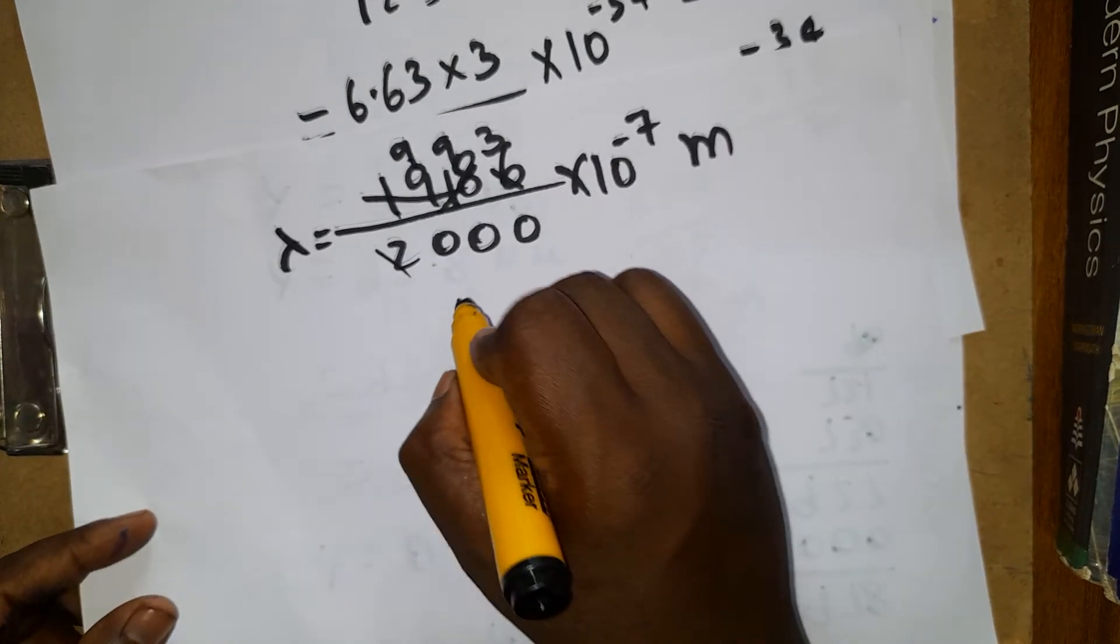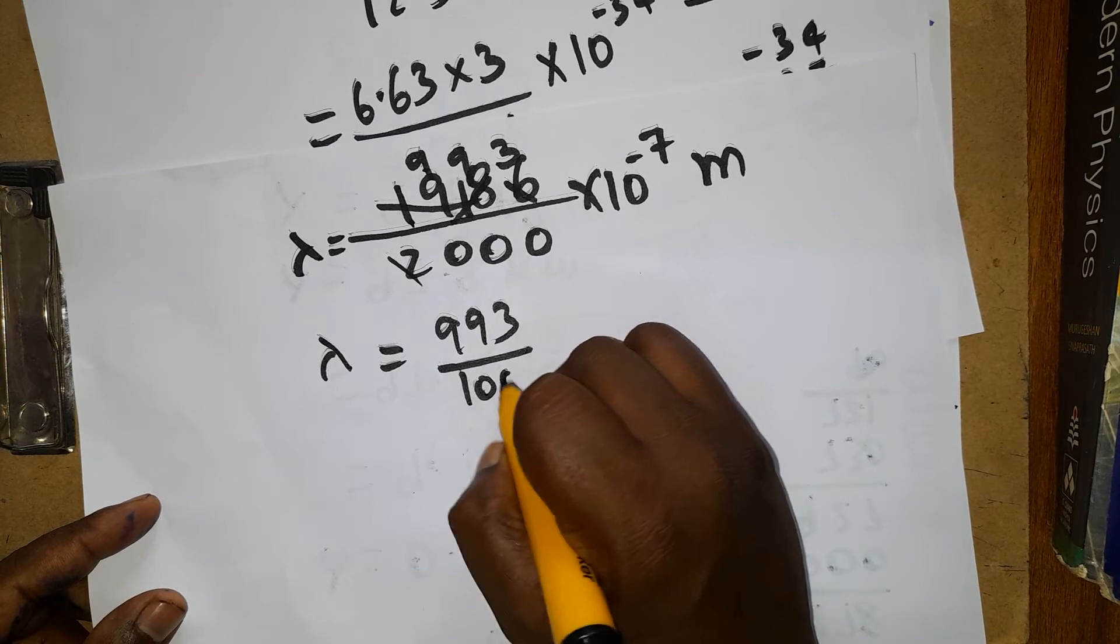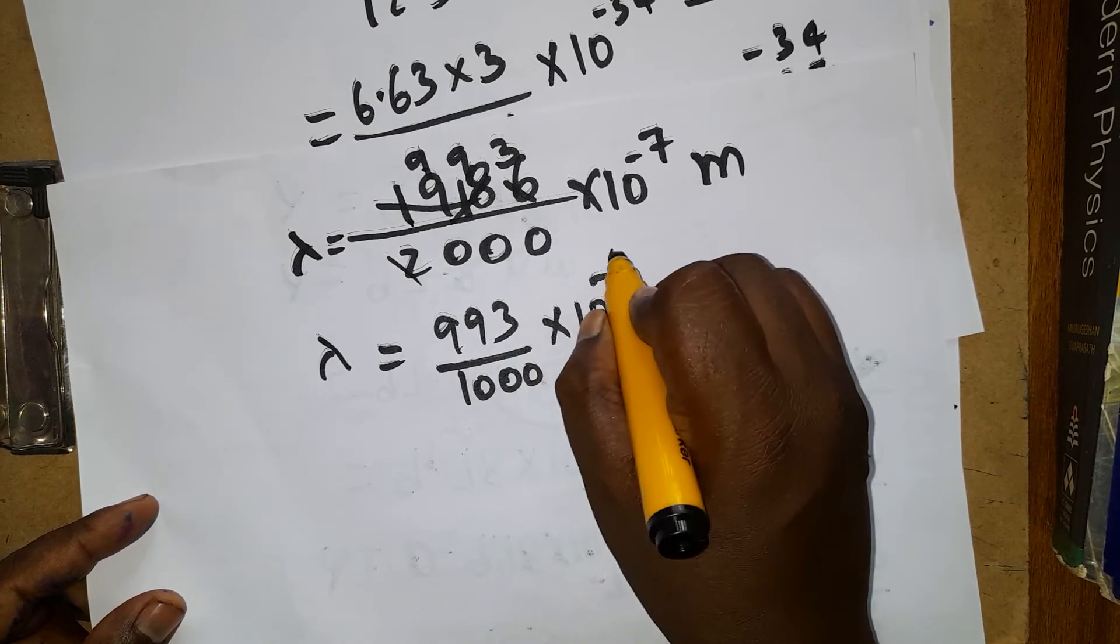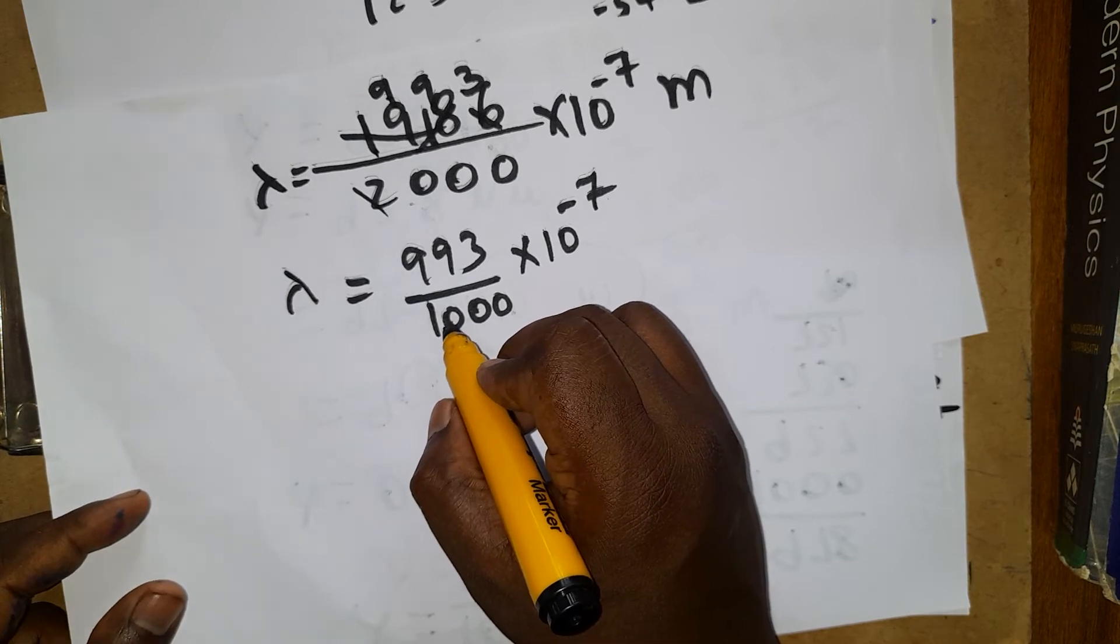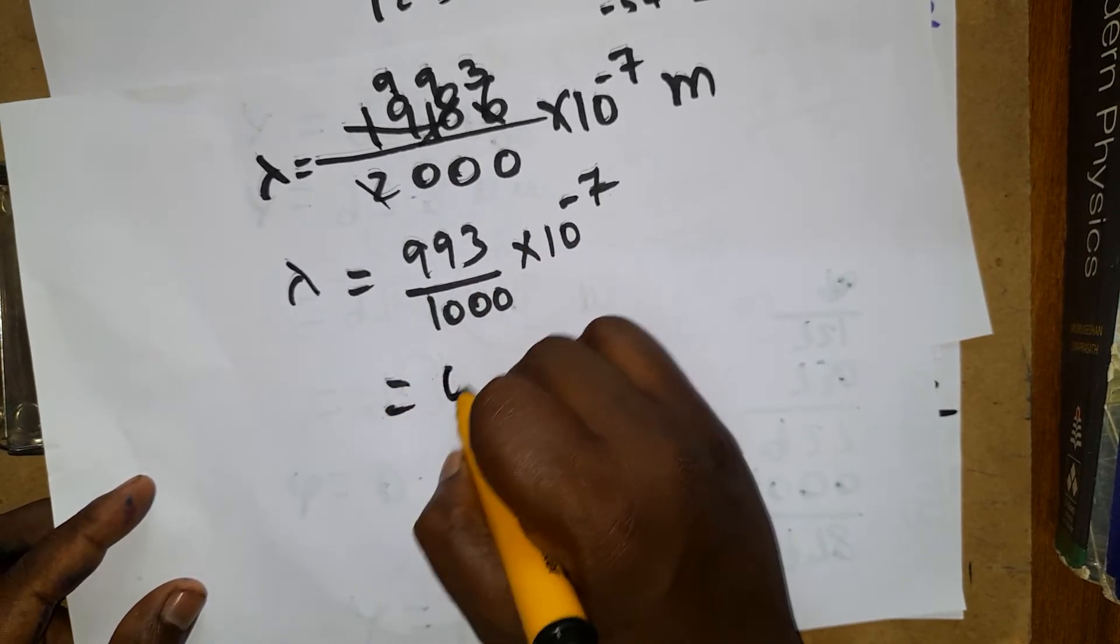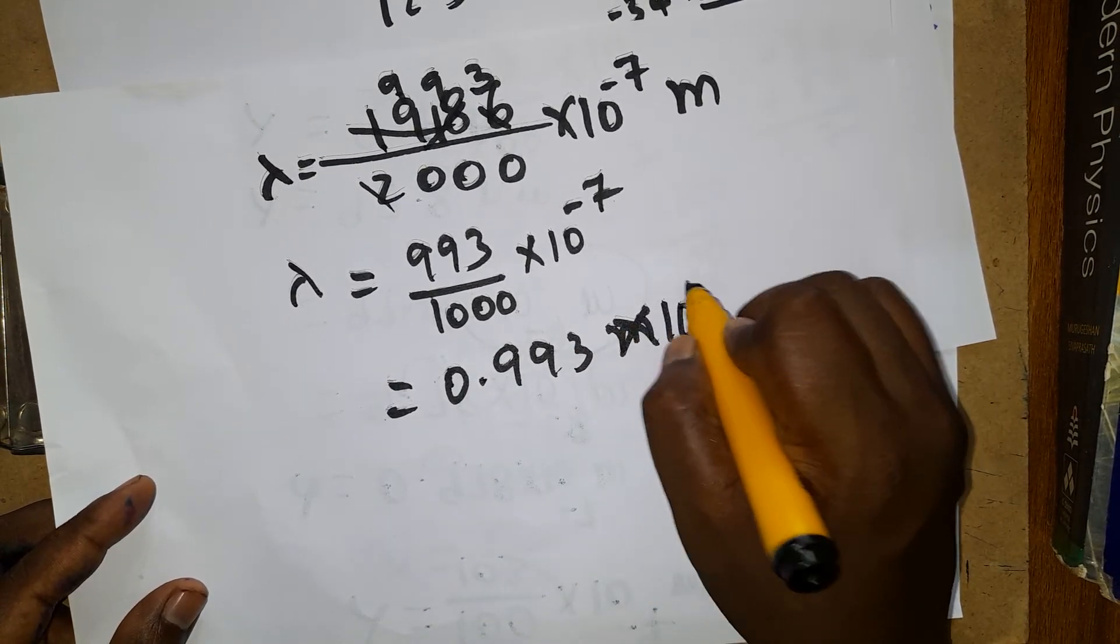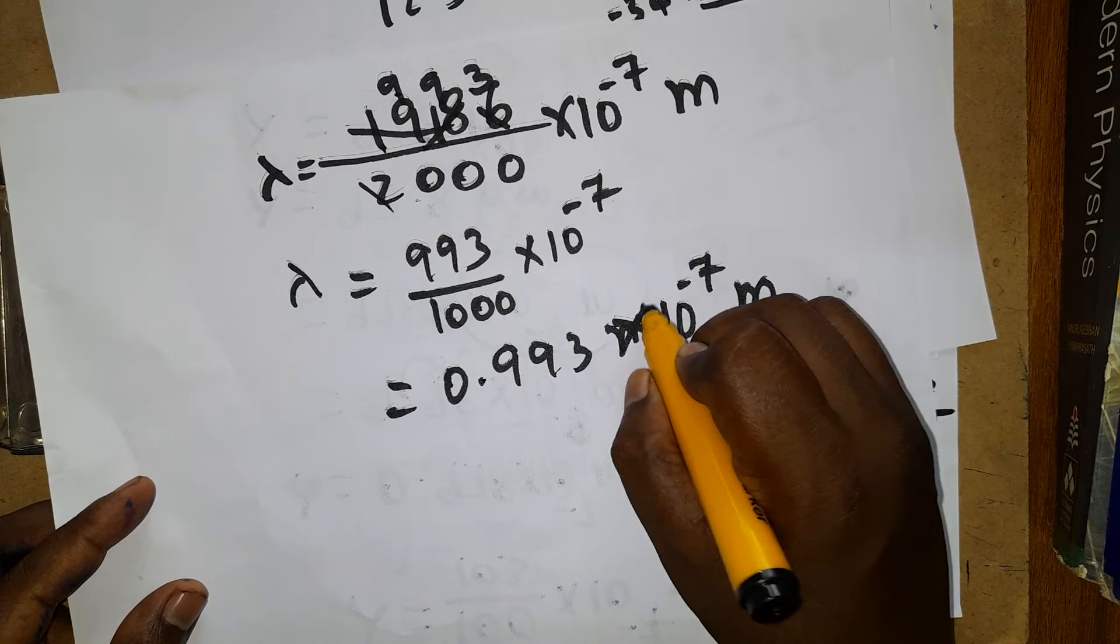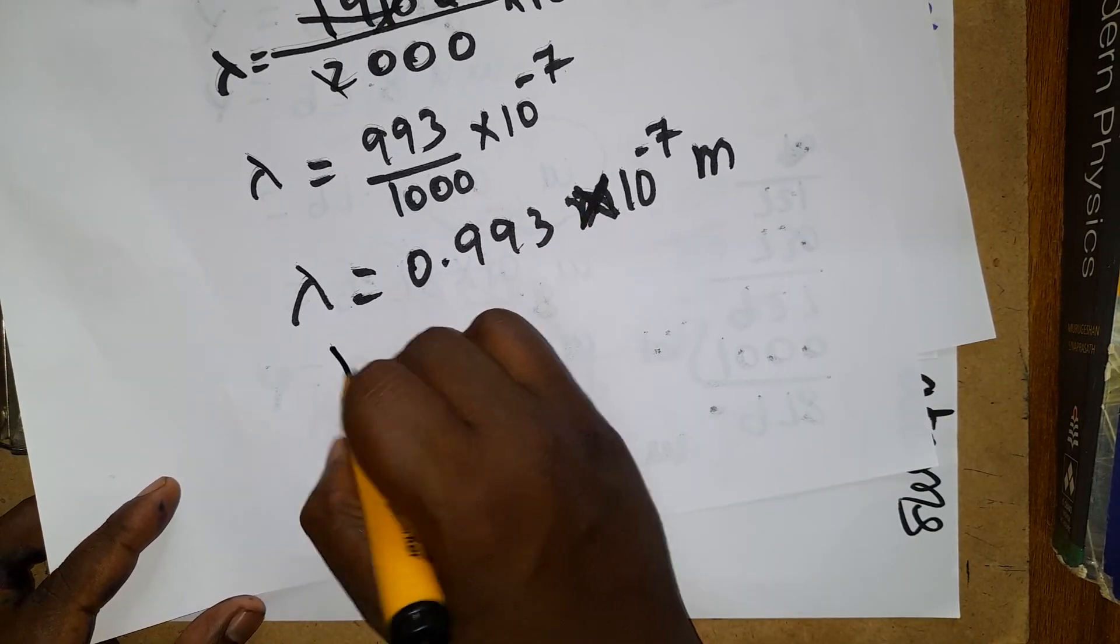If you are canceling 2 tables, 18 will be 9 times, 6 will be 3 times. Wavelength equals 993 divided by 1000 into 10 power minus 7. We can write 1000 as 10 power 3, so it becomes 0.993 into 10 power minus 7 meter.